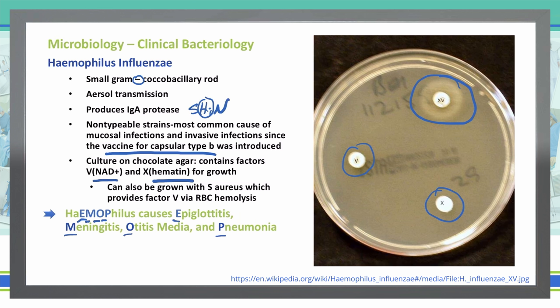It's important to note that despite 'influenzae' in the name, Haemophilus influenzae does not cause the flu — that is caused by the influenza virus. The Haemophilus influenzae vaccine is given to children, usually in the 2 to 18 month range, to help reduce the risk of infection.